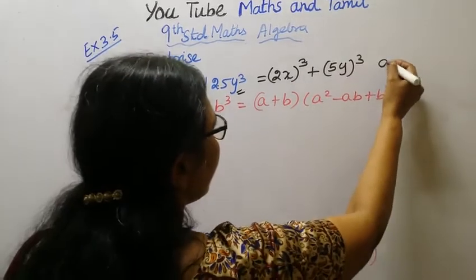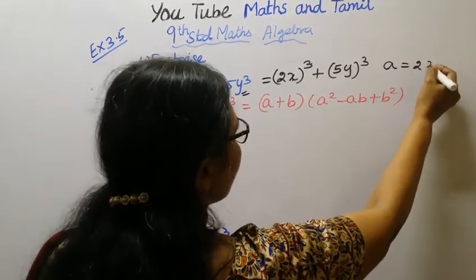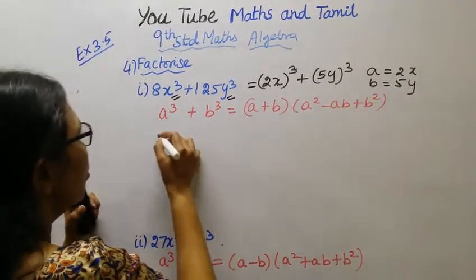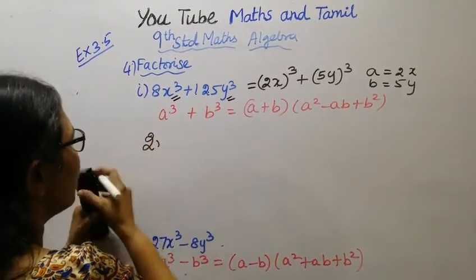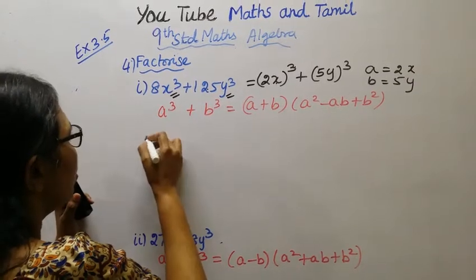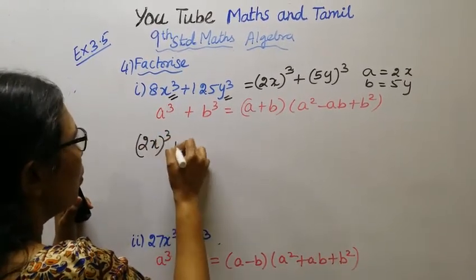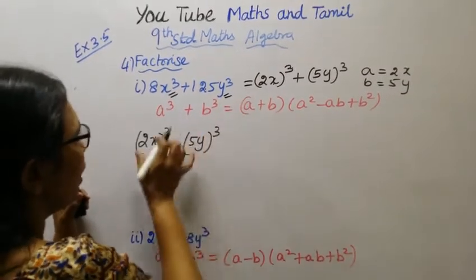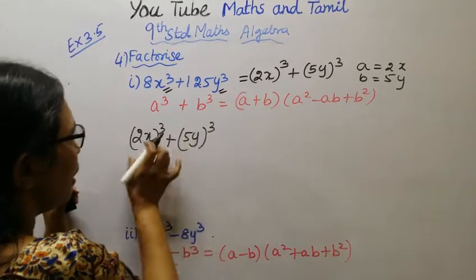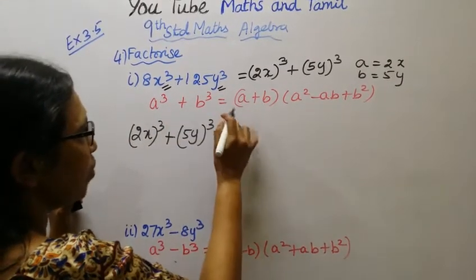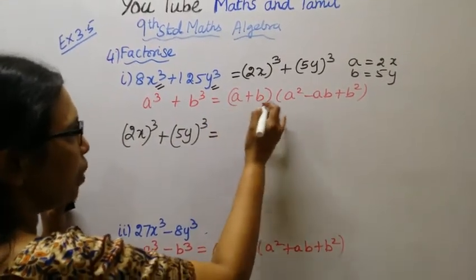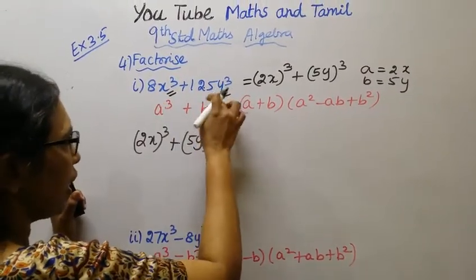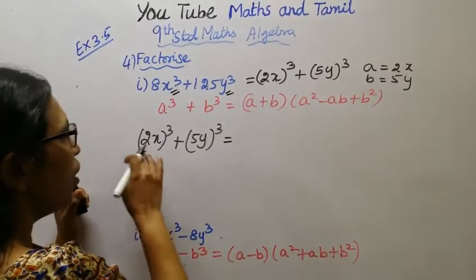Then a = 2x, b = 5y. Then (2x)³ + (5y)³. You know, a³ + b³ - the identity is (a+b)(a² - ab + b²). If you're going to get the value of a³...